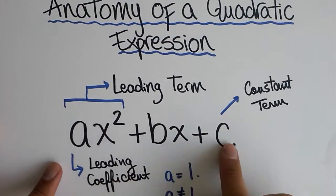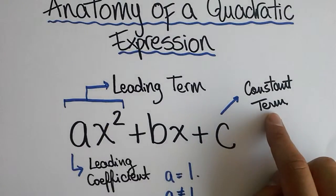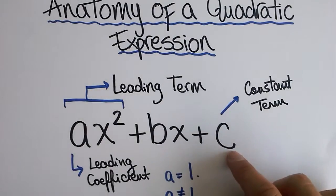Finally, the last term of our quadratic expression, that we call c, is a constant term. And this guy is going to be the determinant to the way we factor these expressions.